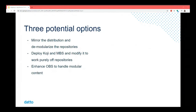Another option was to deploy Koji and MBS and modify it to work purely off repositories. The architecture currently expects that you can talk to the Koji endpoint of the distribution you're building for to understand what's available — but strictly speaking, nothing explicitly mandates that as long as you're okay working with published content only. The final option was to enhance OBS to handle app streams and other modular content.